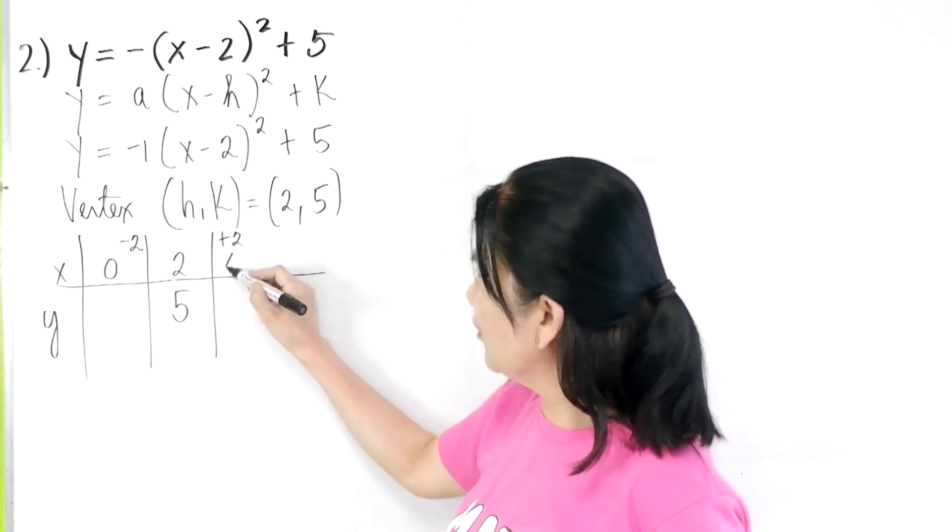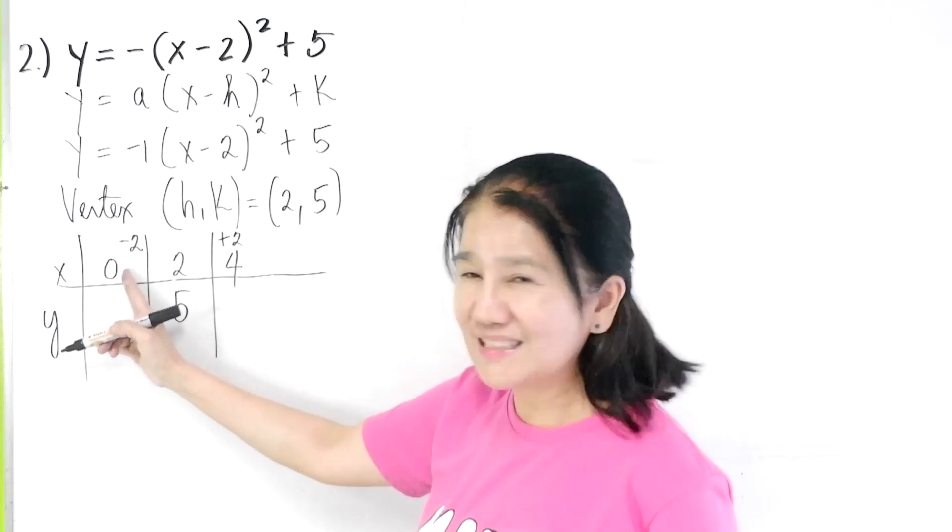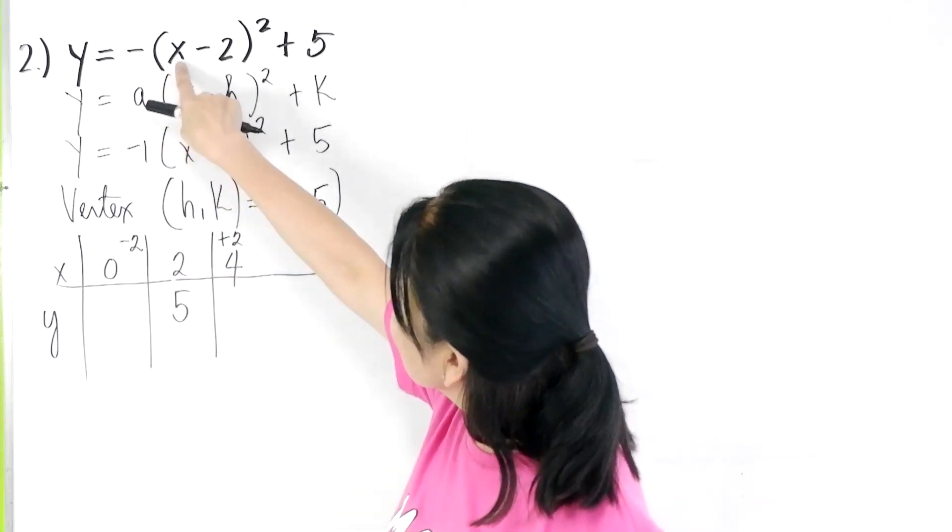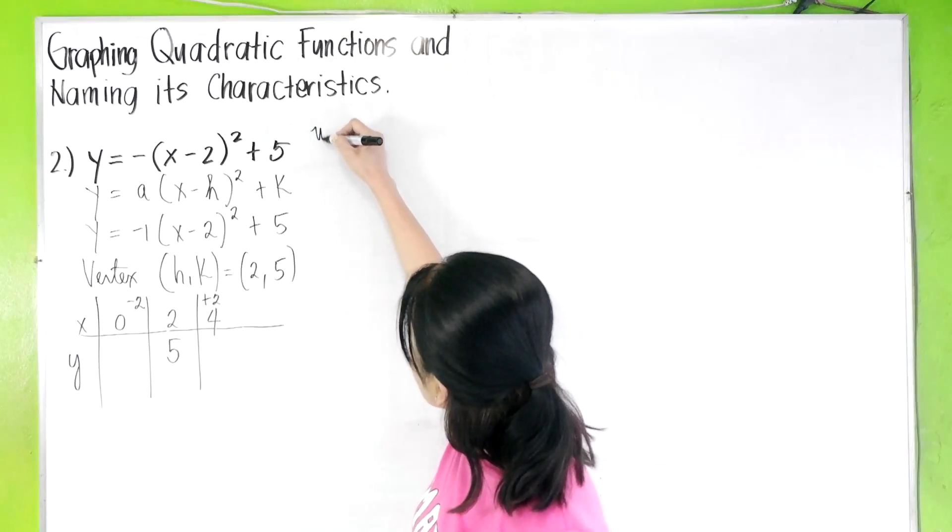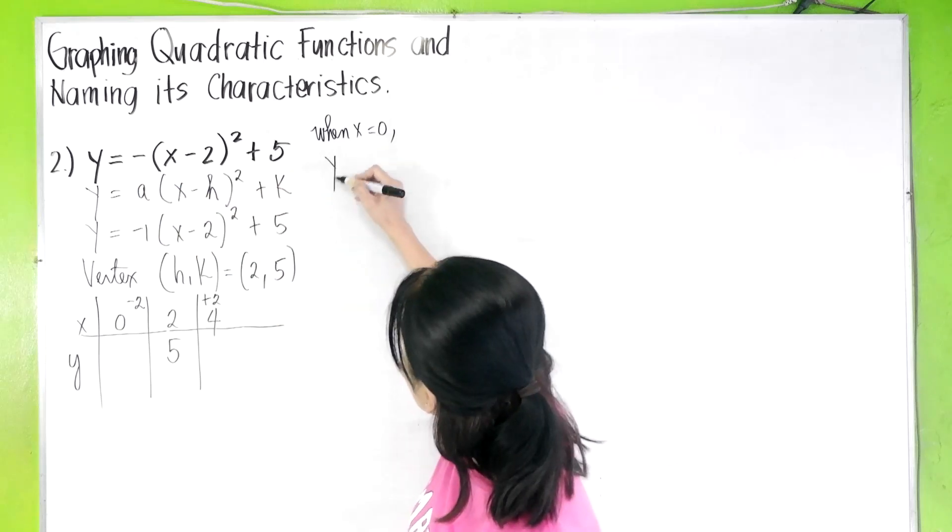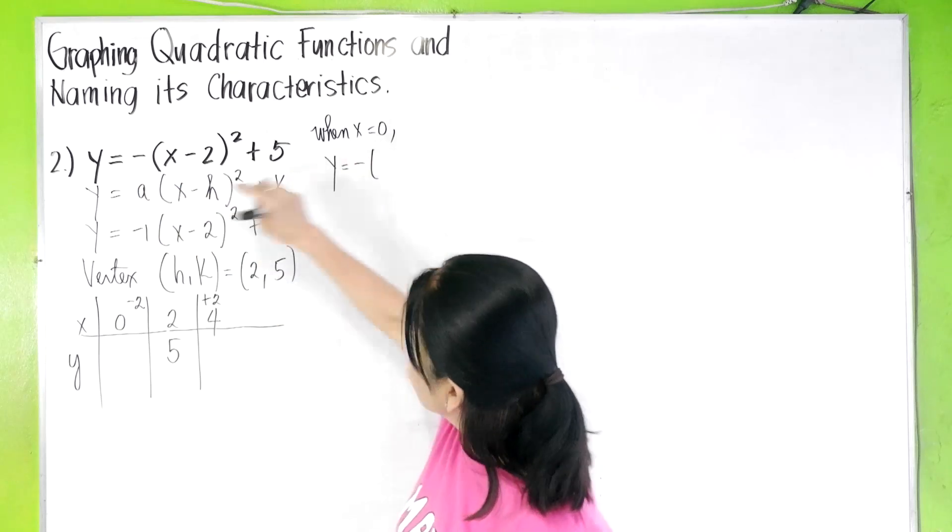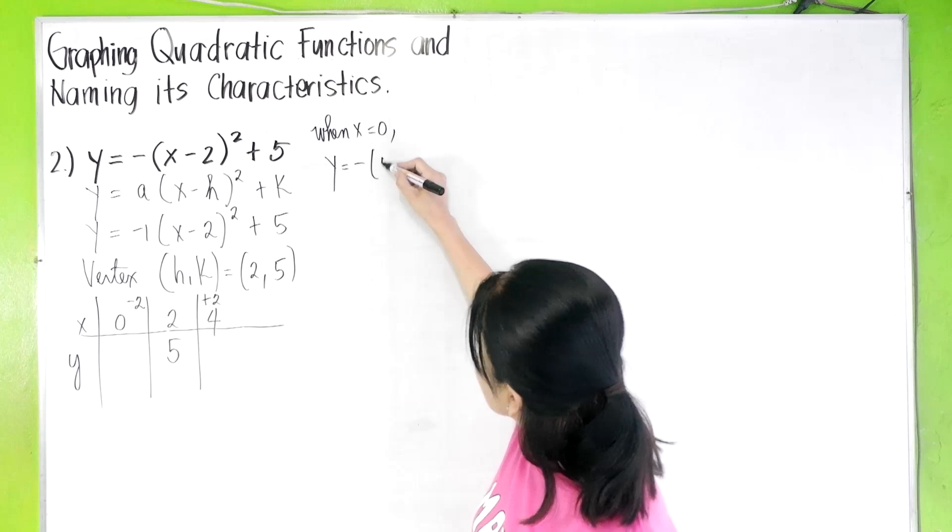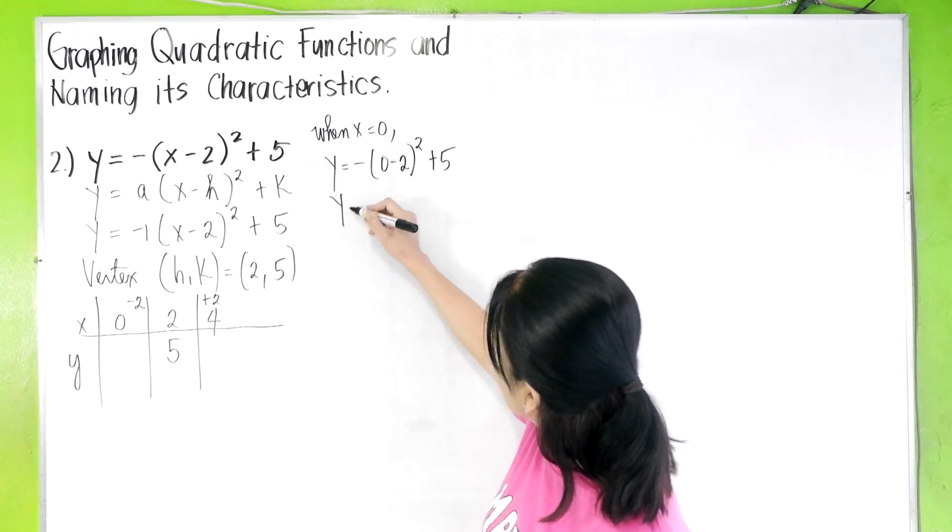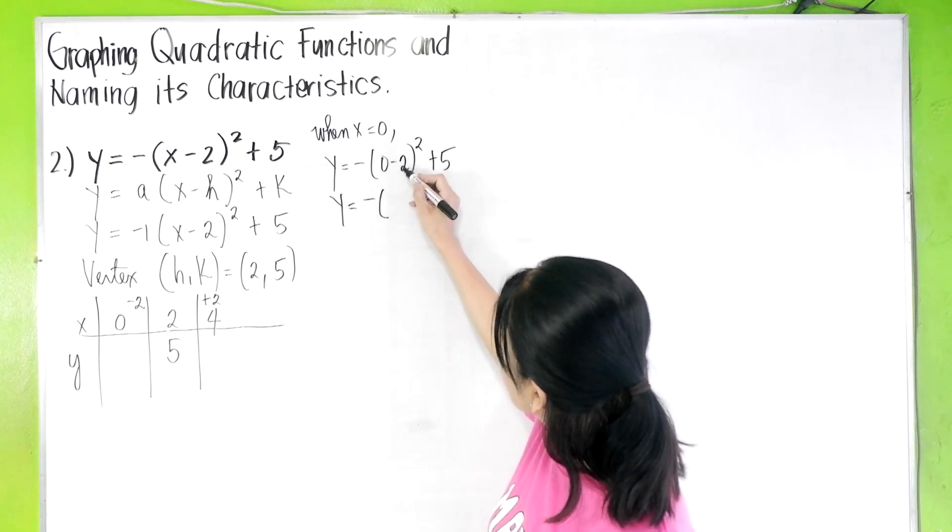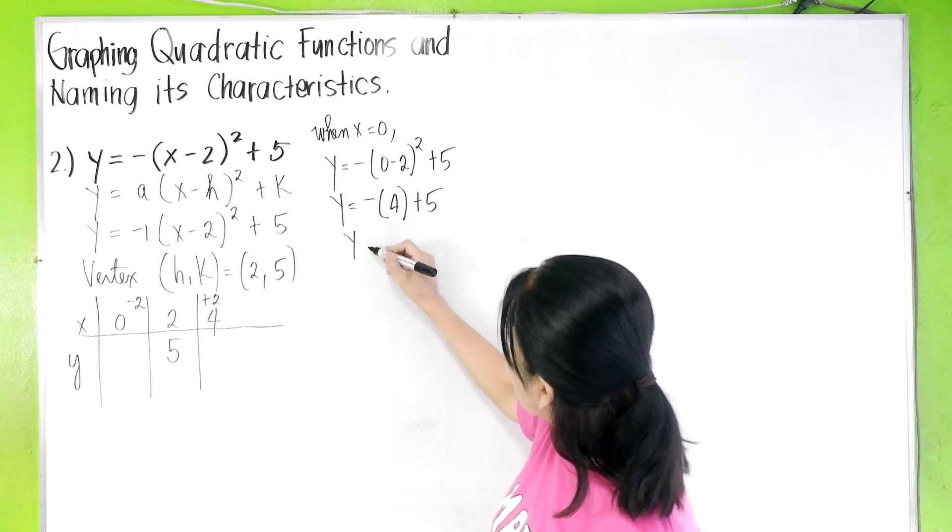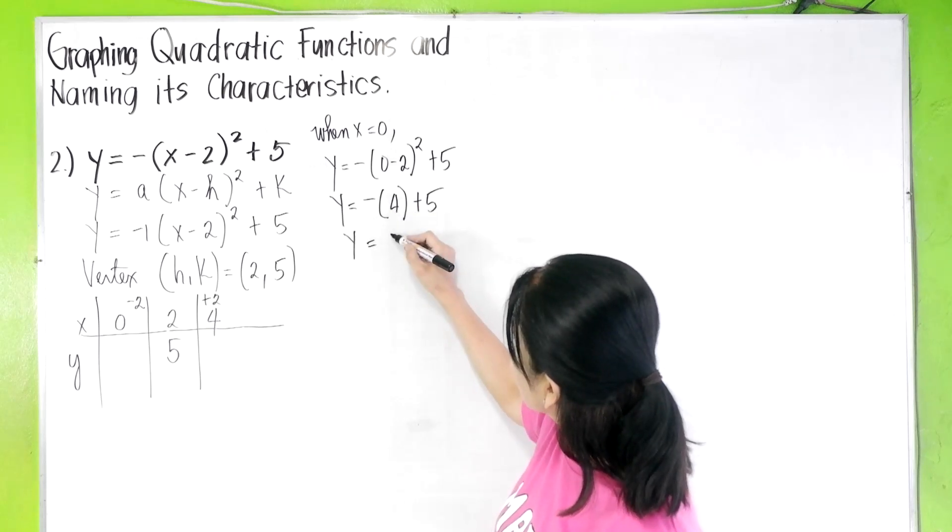Two plus two is four. When x is zero, what do we have here? Substitute here in the original equation. So when x is zero, substitute, so y is negative zero minus two quantity squared plus five gives us y is negative, negative two squared is positive four plus five, or y equals five minus four is one.